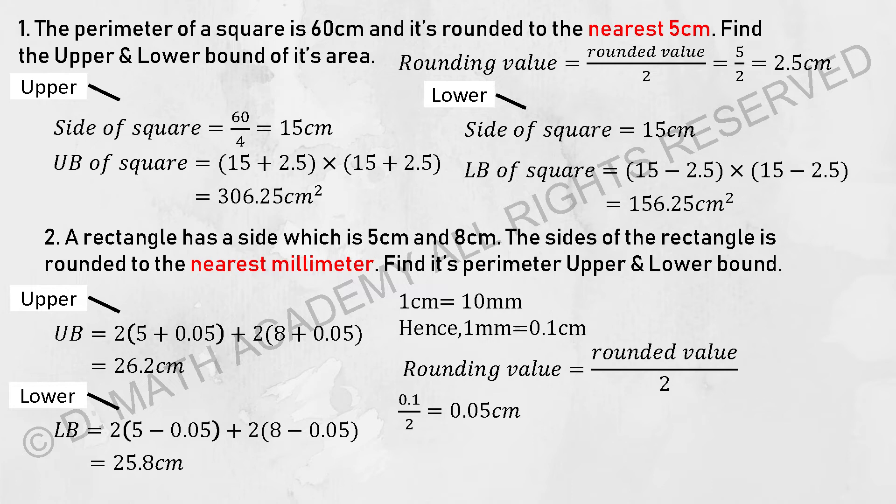For us to calculate the lower bound, simply take 5 minus 0.05, multiply it by 2, and take 8 minus 0.05 and multiply it by 2 as well. Then you will get the final result as 25.8.